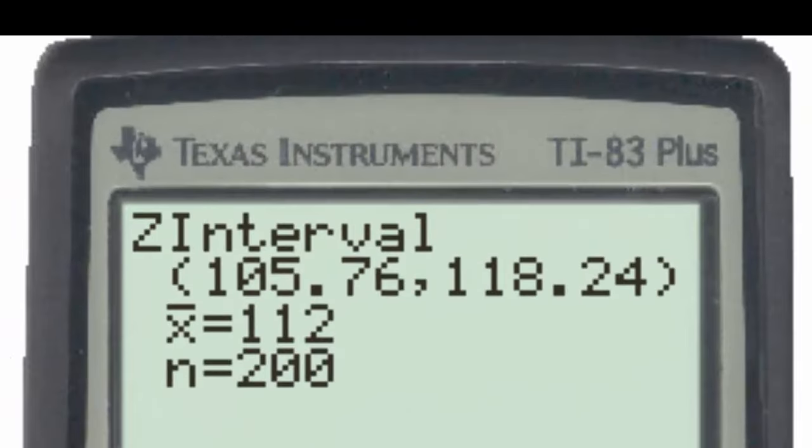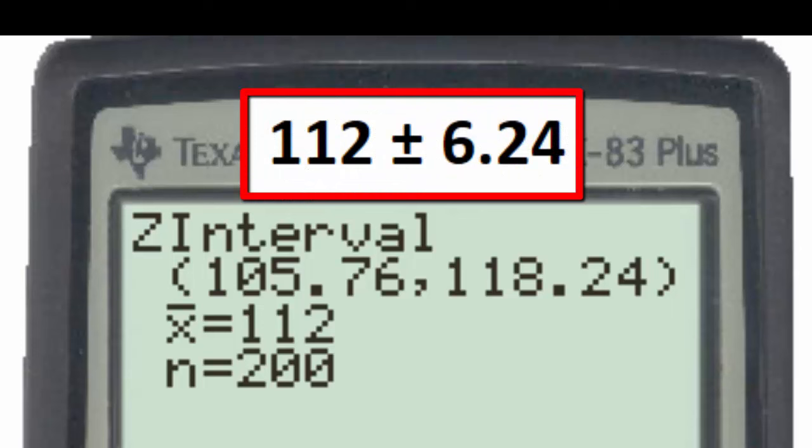Writing this confidence interval using margin of error notation, we would have 112 plus or minus 6.24,